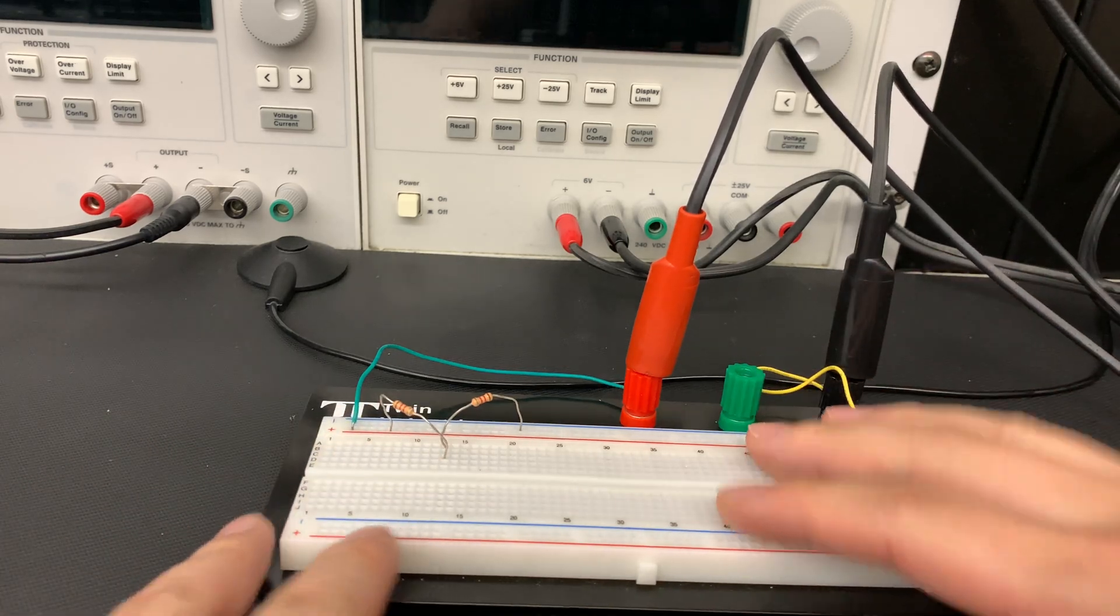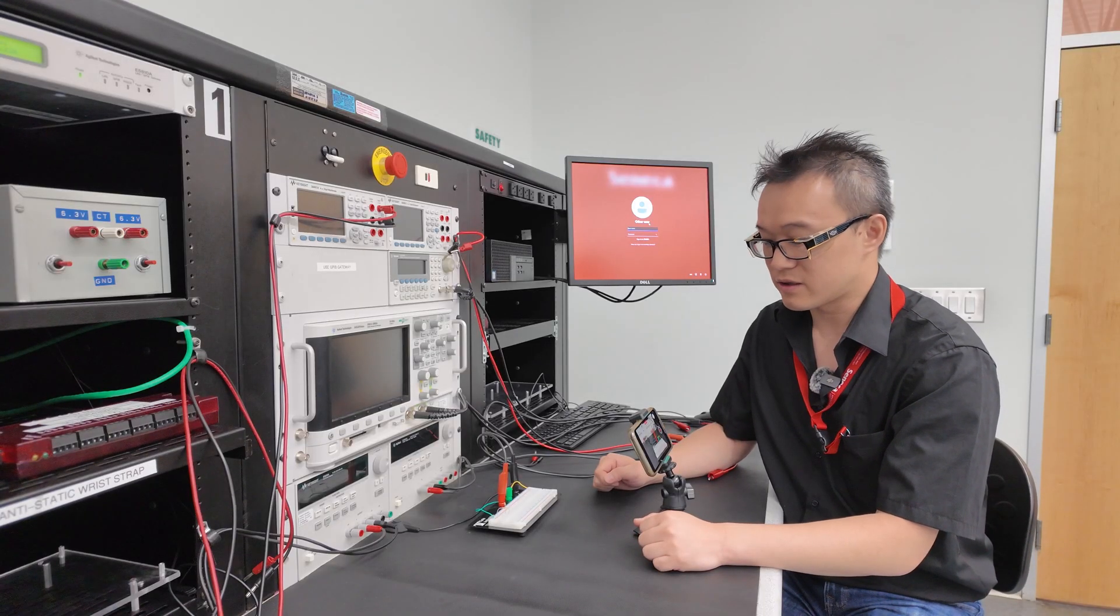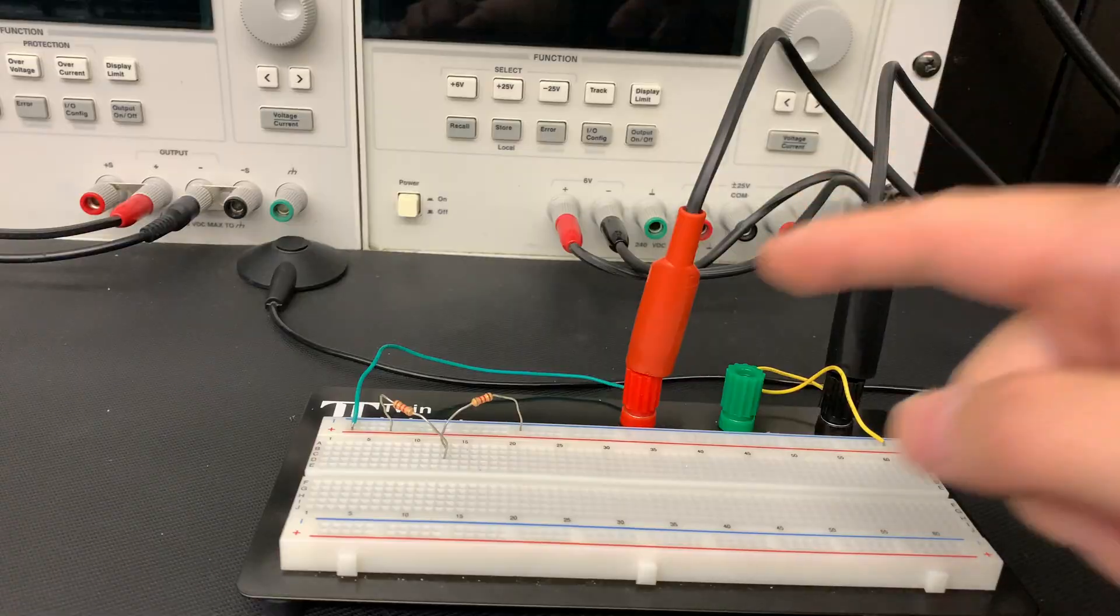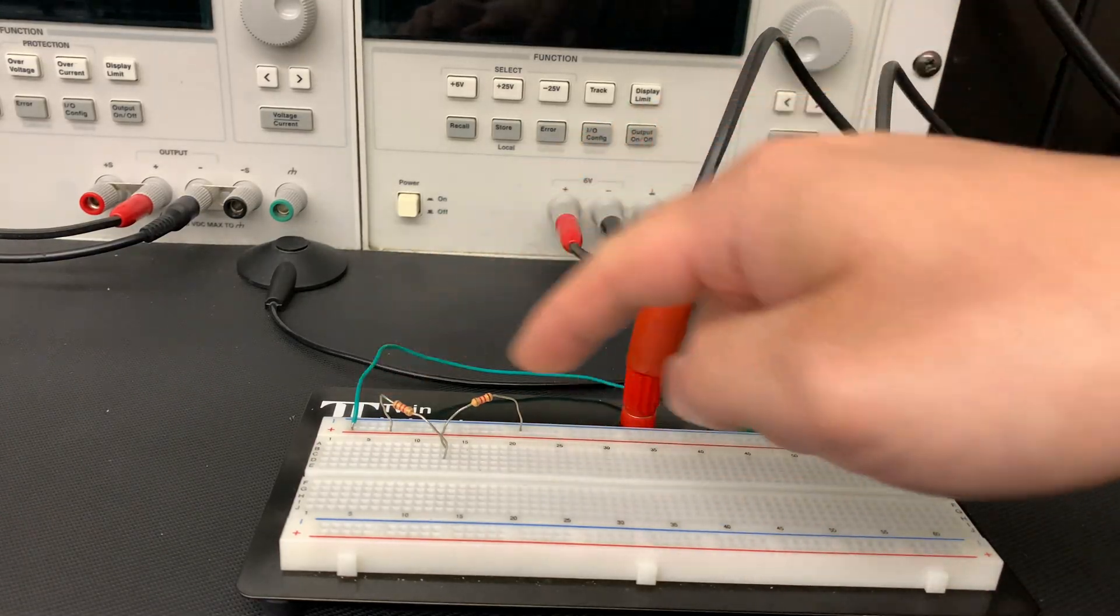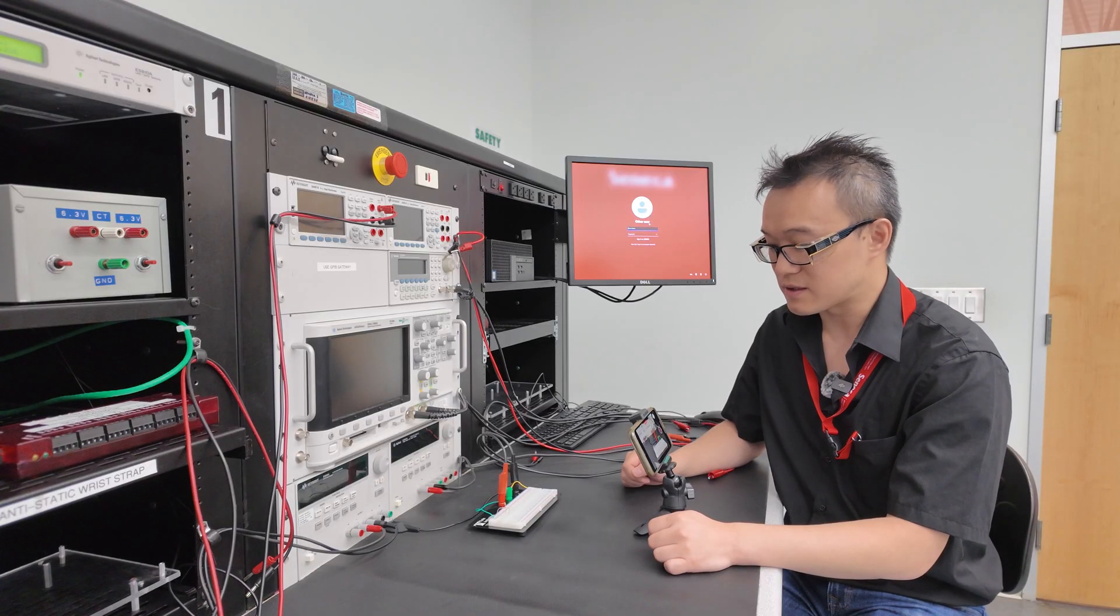What we have set up here is a breadboard with two resistors connected in series, and we're going to try to measure the voltage at each particular point of the circuit.